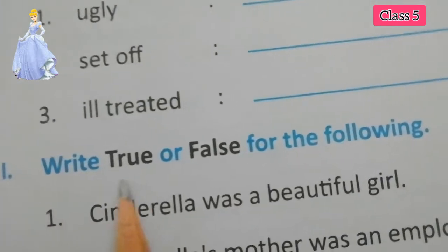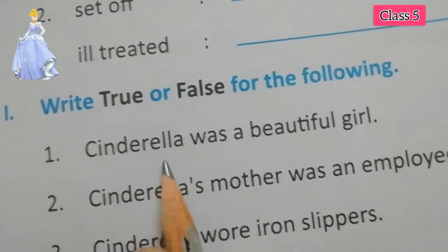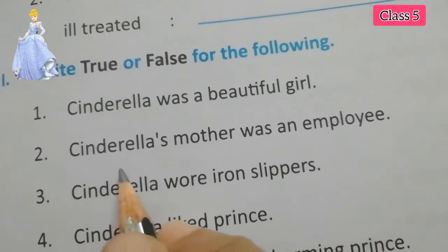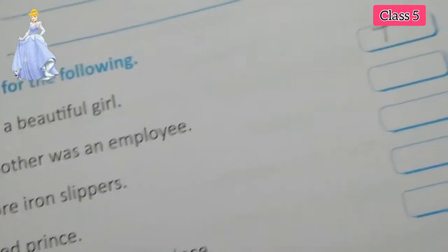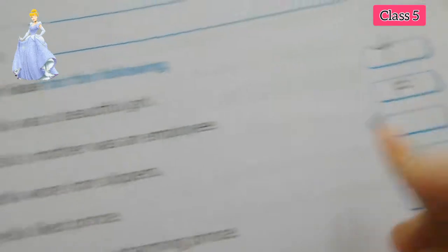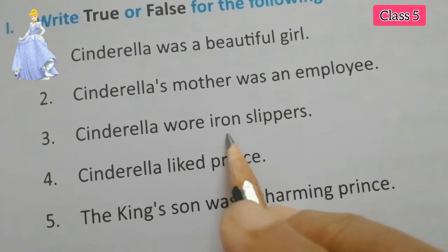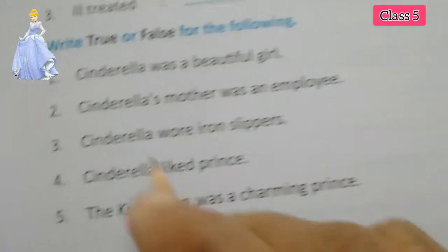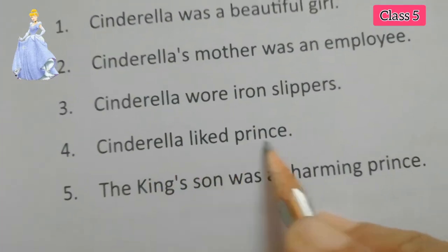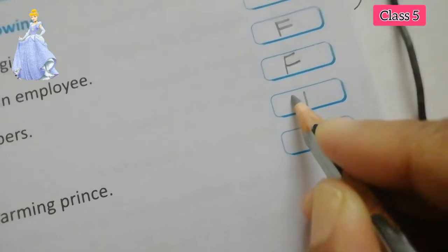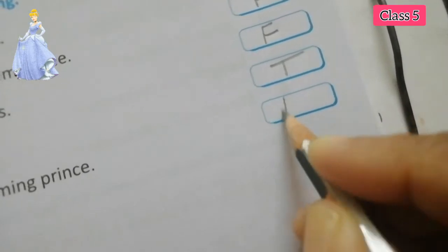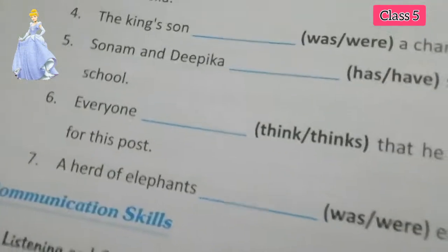Next, copy the meanings from the textbook. Write true or false: Cinderella was a beautiful girl — true. Cinderella's mother was an employee — false, she had no mother. Cinderella wore iron slippers — false, she wore glass slippers. Cinderella liked the prince — true. The king's son was a charming prince — true.